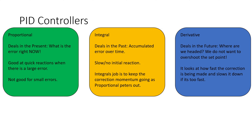Integral deals with the accumulated error over time. Whenever there's an initial error, even if it's really big, integral doesn't react immediately — it sits back, reflects on it, and says maybe it'll get better by itself, I'm not going to make any knee-jerk reaction. It works well with proportional because proportional knocks down that initial error, and then integral takes over as proportional stops doing a lot of work. You could think of proportional as first and second gear, and integral as third and fourth gear.